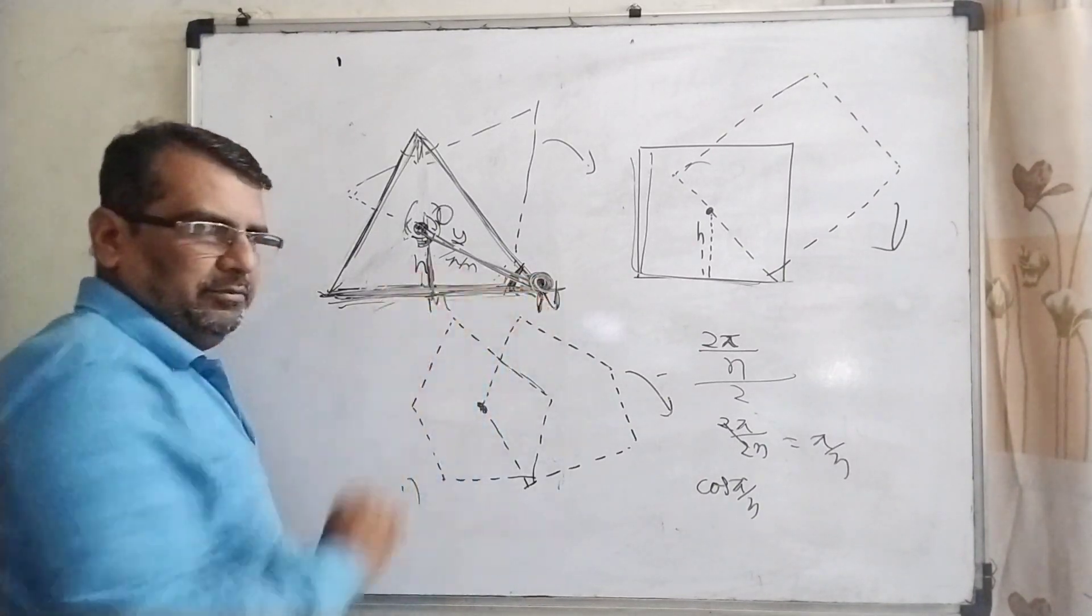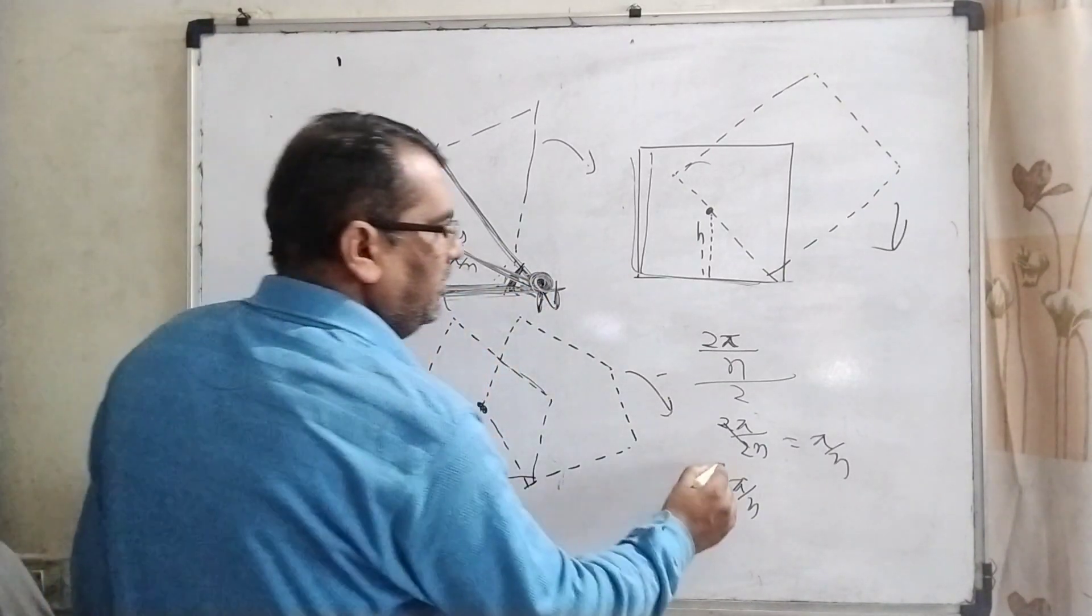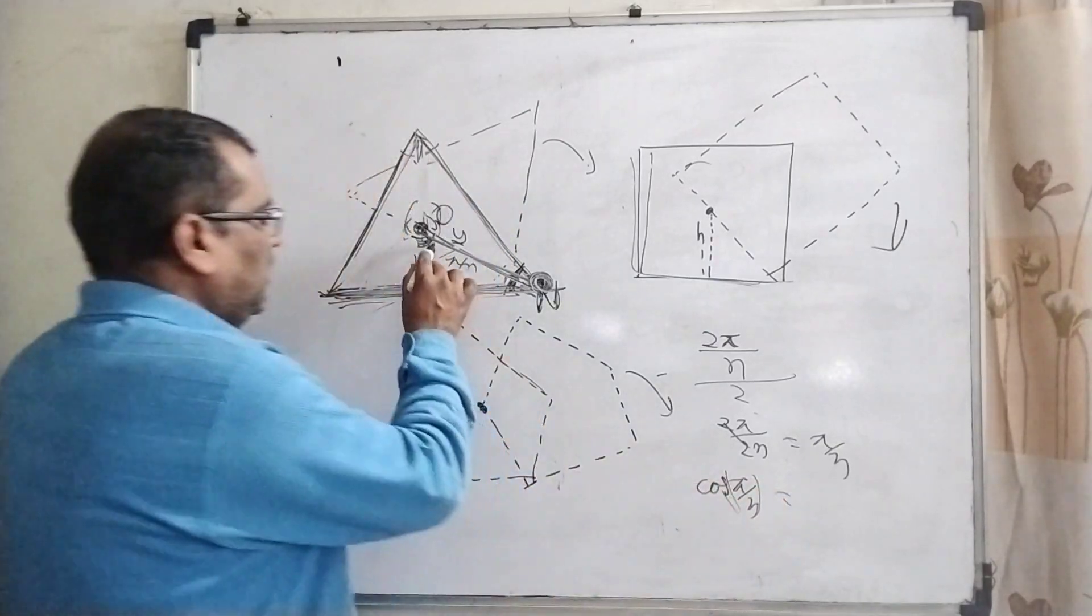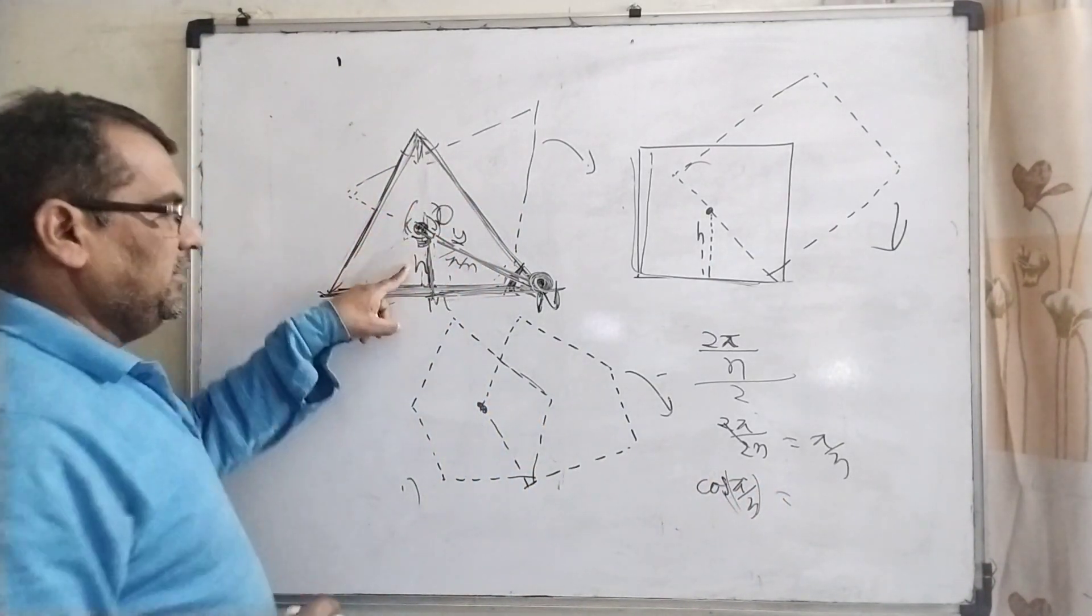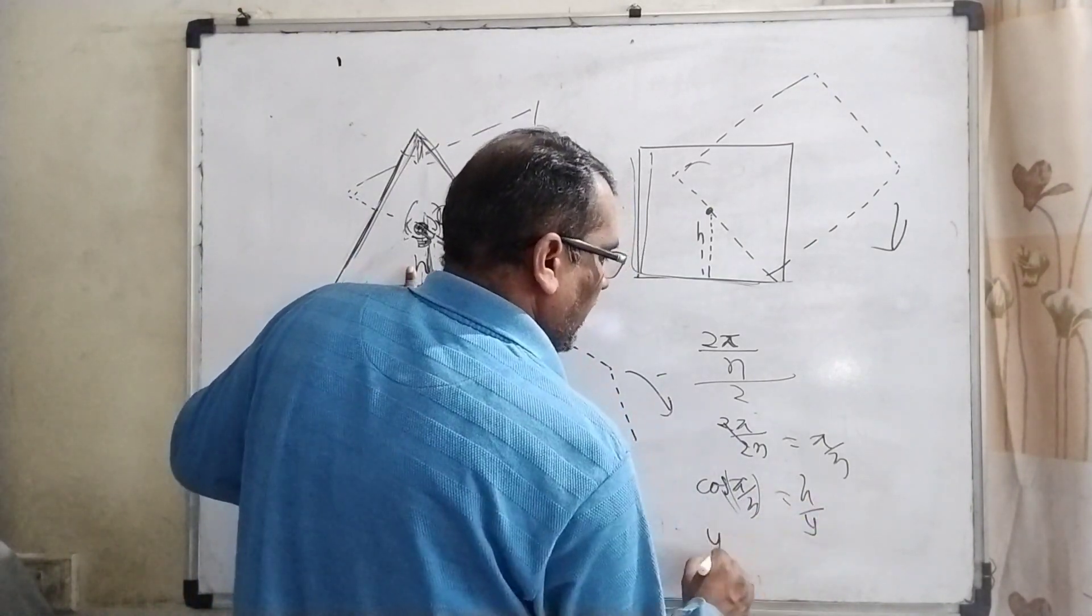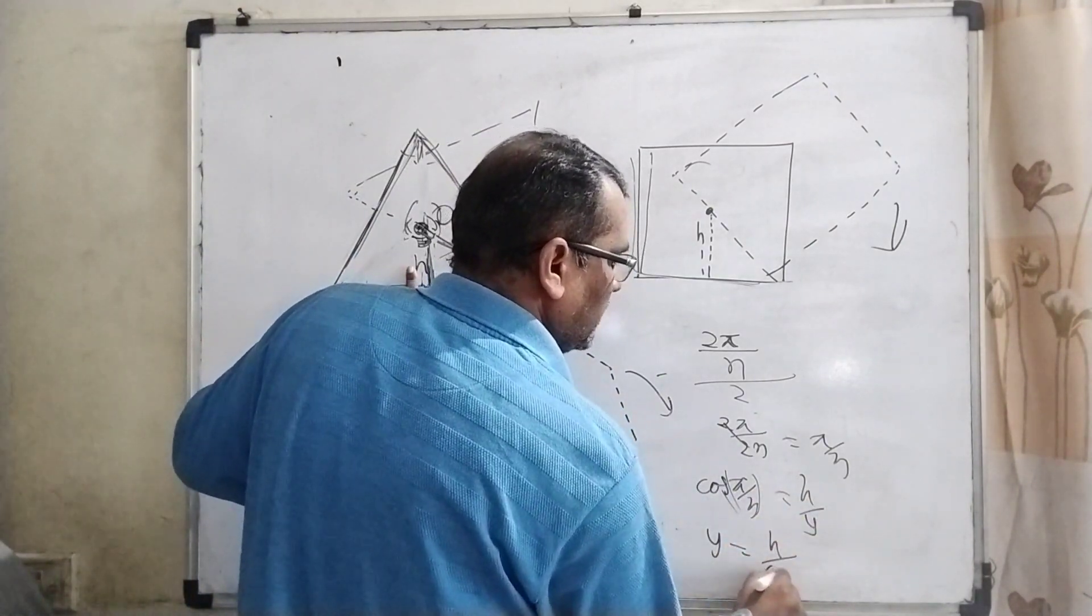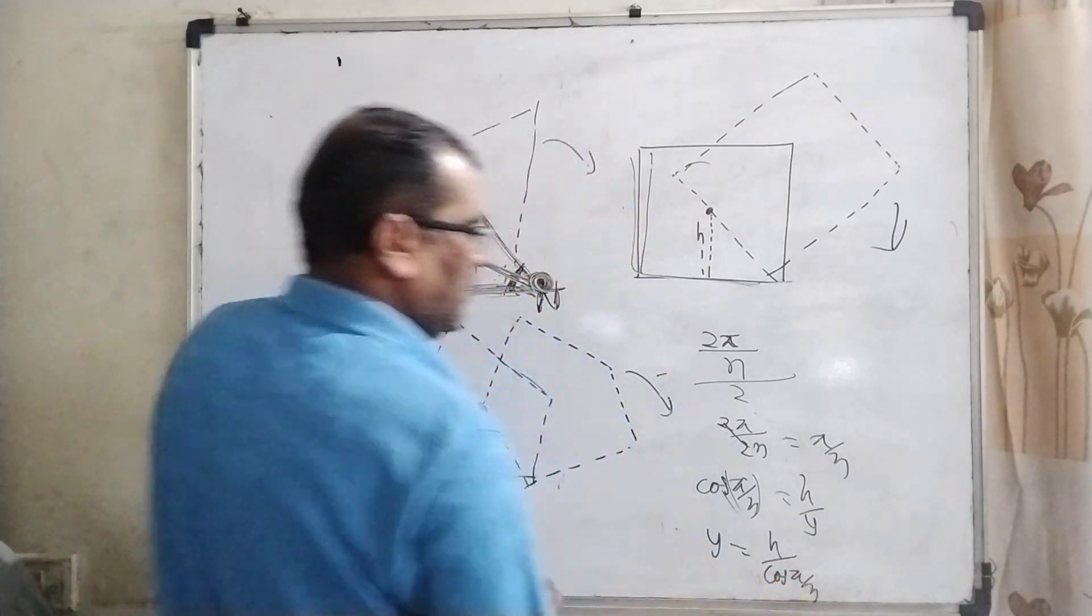And this is the hypotenuse. Then h/y, then y can be written as h/cos(π/n). Is it clear?